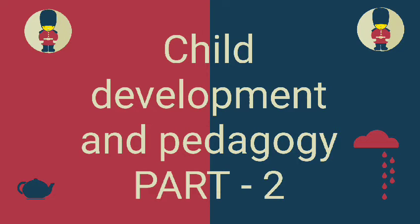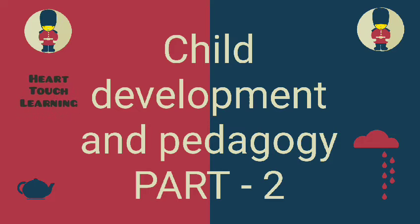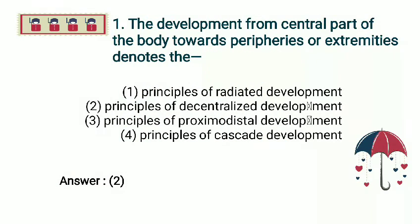Welcome to my channel. Child Development and Pedagogy Part 2 — we will do some questions. Question 1: Development from the central part of the body towards peripheries or extremities denotes which principle? Options: Radiated development, Decentralized development, Proximodistal development, Kaskar development. Answer: Principle of Proximodistal development.